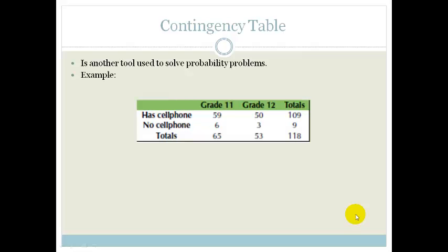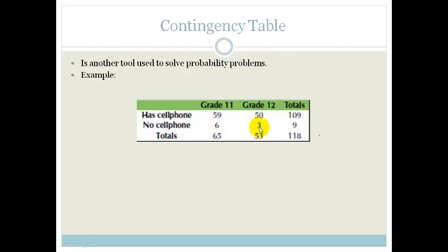Let's look at an example. We've got this table here. We've got grade 11s, grade 12s, and then some grade 11s have a cell phone and some don't. The total number of grade 11s is 65, the total number of grade 12s is 53, and the total number of kids is therefore 118. 59 of the grade 11s have a cell phone and 50 of the grade 12s have cell phones, so only 6 and 3 people don't, giving 9 without cell phones.